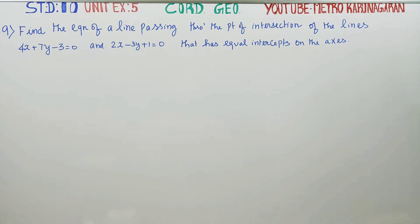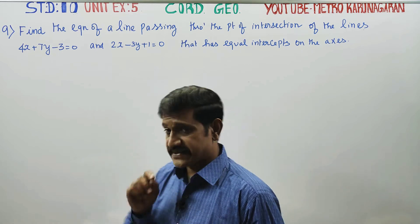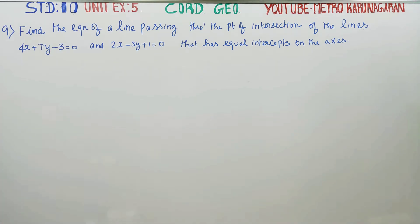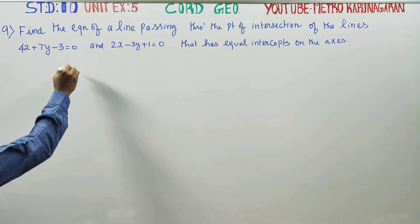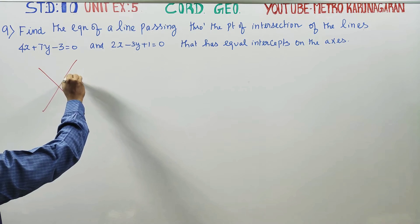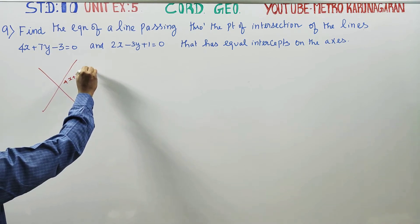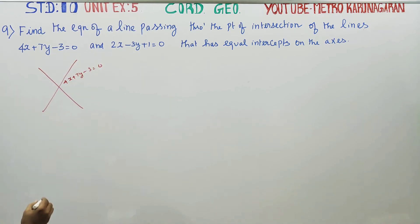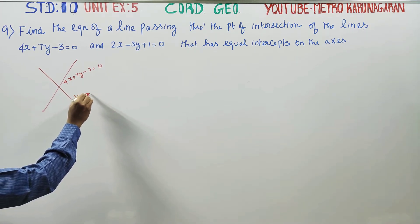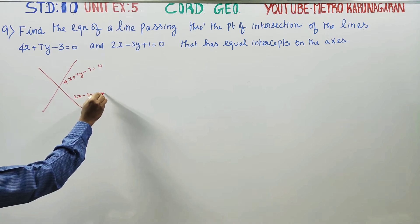Dear 10th standard students, in coordinate geometry, unit exercise number 5, sum number 9: find the equation of the line passing through the point of intersection of the lines. Line 1 is 4x plus 7y minus 3 equals 0, and line 2 is 2x minus 3y plus 1 equals 0.